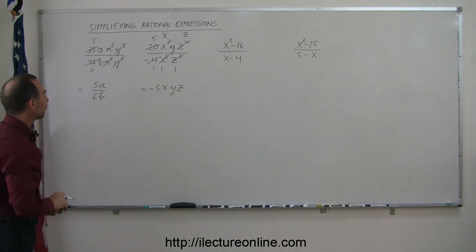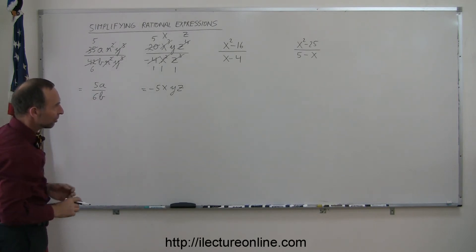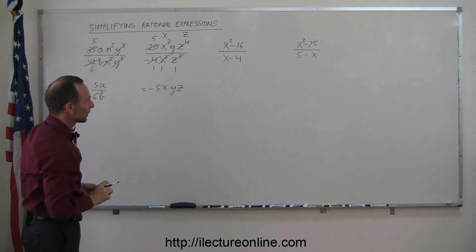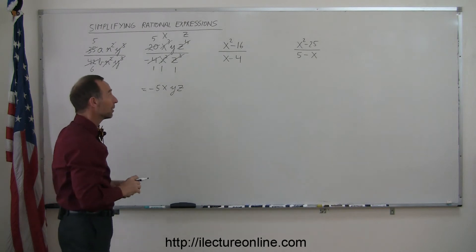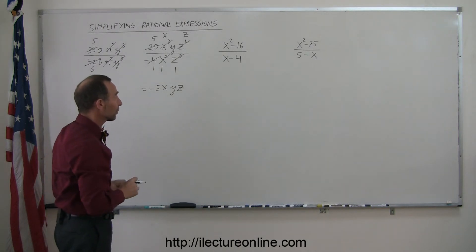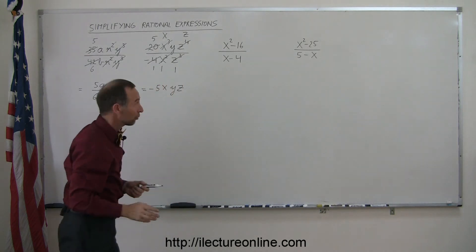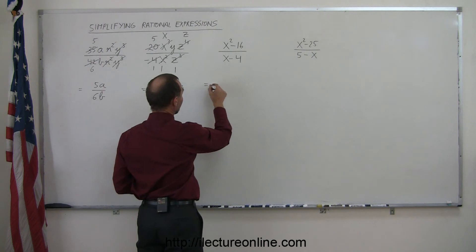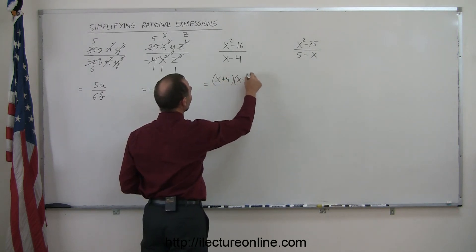Those are fairly straightforward — we simply look for things common in the numerator and denominator and cancel them out. But the next problem is not as straightforward. Here we want to factor the numerator. I recognize this as the difference of squares, so I can write it as a product of two binomials: x plus 4 times x minus 4.